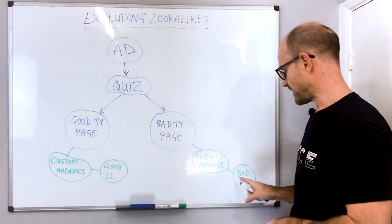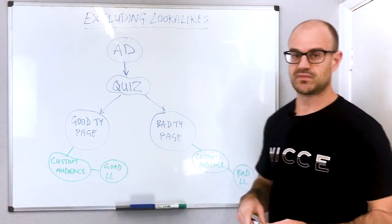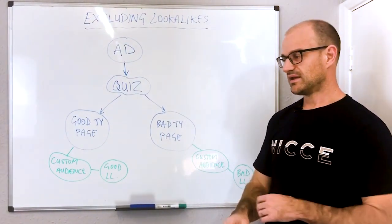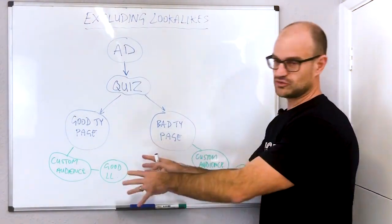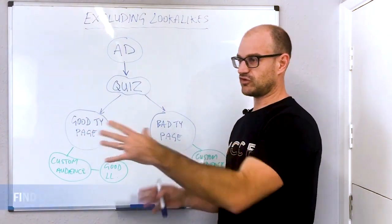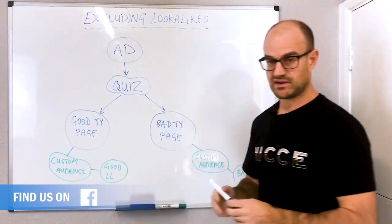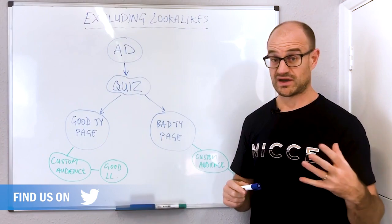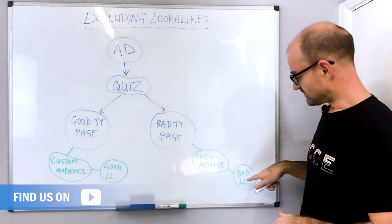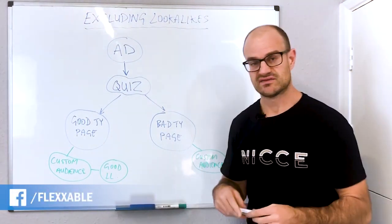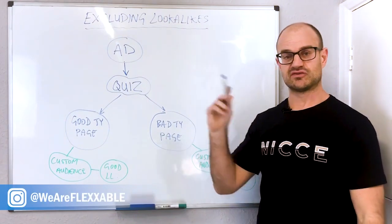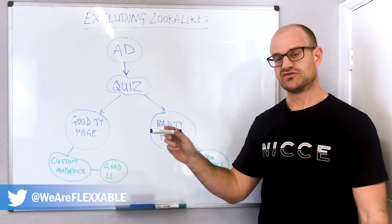You can use the good look-alike audiences for your advertising moving forward, but a good trick that we've learned and we're actually using within our agency already is taking that bad look-alike audience and excluding it from our targeting.